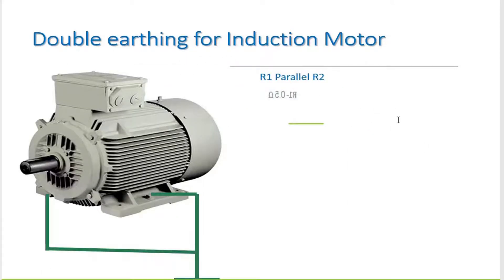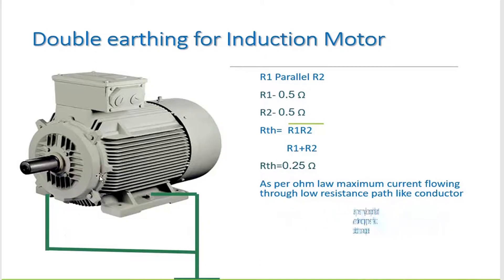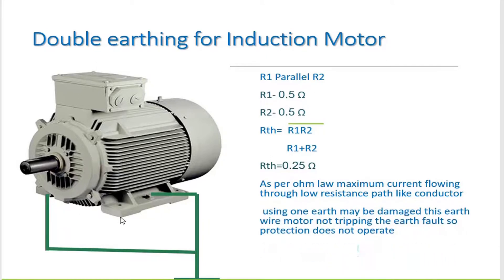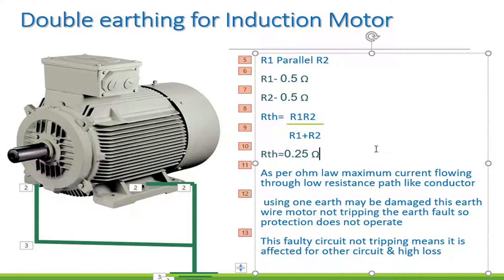For double earthing, we connect one earth on one side of the motor and another earth on the other side. For example, R1 is one earth at 0.5 ohms and R2 is another earth at 0.5 ohms. When we connect these two in parallel, the total resistance is reduced to 0.25 ohms.